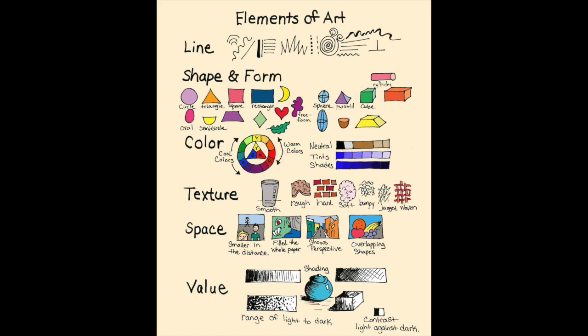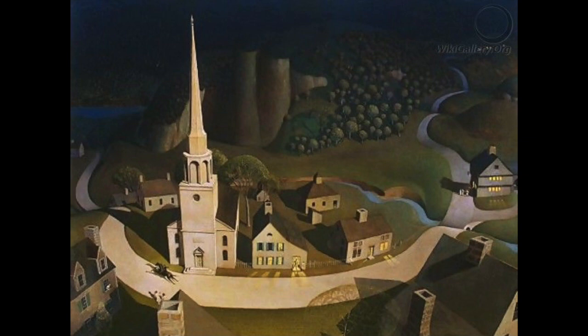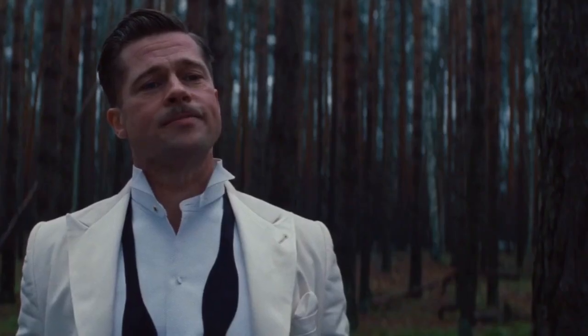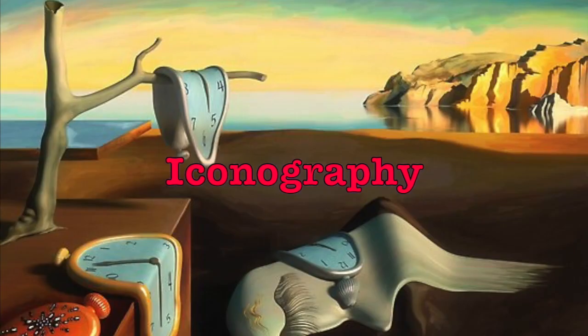Today's video is going to focus on iconography. The elements of art present content even in a situation where there is no nameable or recognizable subject matter represented. However, when any subject matter is presented, the meaning is often based on traditional interpretations. Iconography is the symbolic meaning of signs, subjects, and images.